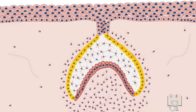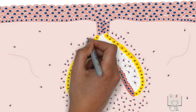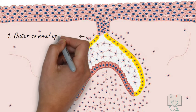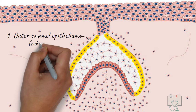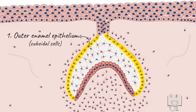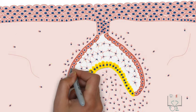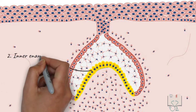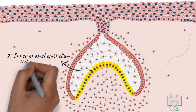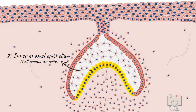A single layer of cells lining the convex surface of the cap forms the outer enamel epithelium, which are cuboidal in shape. A single layer of cells lining the concave surface forms the inner enamel epithelium, which are tall columnar in shape. These cells later differentiate into ameloblasts and form enamel.